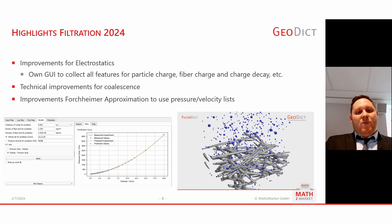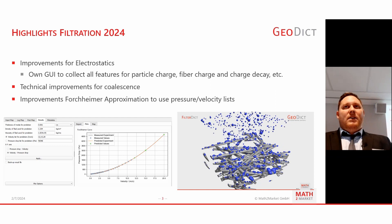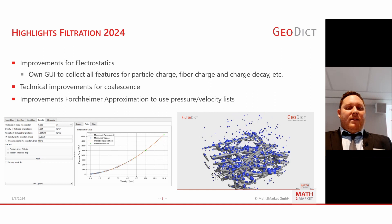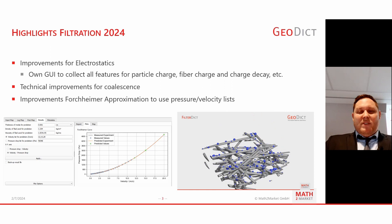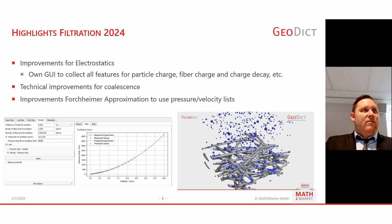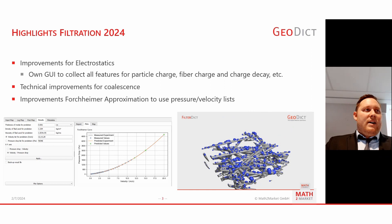Further, we have technical improvements for the coalescence, which has been in the software for two years. Some of the features from the expert settings have been improved in the algorithm, as well as the movement of the coalesced particles. The next step is improved Forchheimer approximation, which allows using values for pressure and velocities. This is very useful when you run simulations or experiments and you gain velocity and pressure pairs.